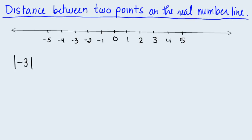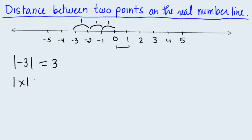In the last video, we learned that the absolute value of a number represents the distance of that number from 0. For example, the absolute value of negative 3 is equal to 3, because negative 3 is 3 units away from 0, where our unit measure is the distance from 0 to 1. This implies that the absolute value of any number is always greater than or equal to 0, because it represents distance, and distance is always positive.